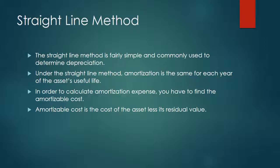For example, if the asset has $500 in its depreciated value and its useful life is five years, every year will be the same. In order to calculate amortization expense, you have to find the amortizable cost, which is the cost of the asset less its residual value.